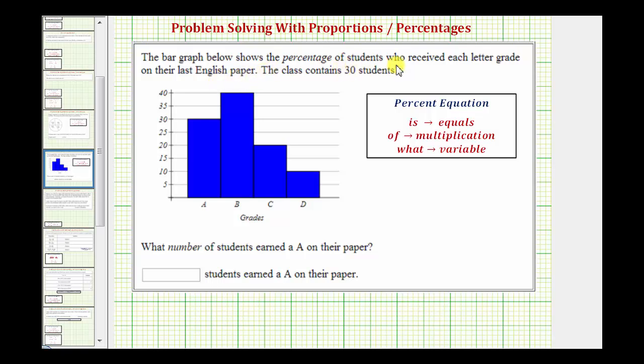The bar graph below shows the percentage of students who received each letter grade on their last English paper. The class contains 30 students. What number of students earn an A on their paper?